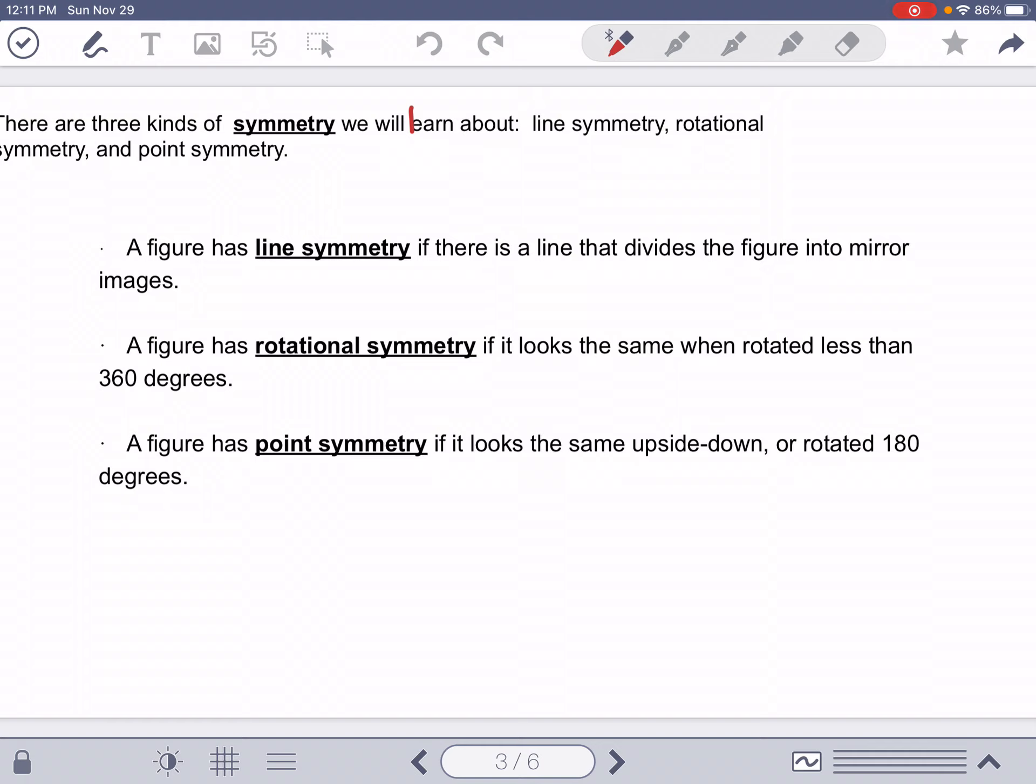A figure has rotational symmetry if when you rotate it around, it looks the same. Now, if you rotate anything around far enough, it's going to look the same. So notice the little stipulation here, less than 360 degrees. So if I take an object and I rotate it 180 degrees, does it still look the same? If it does, then it has rotational symmetry.